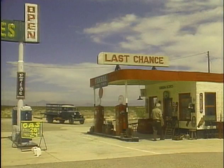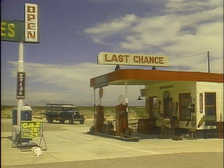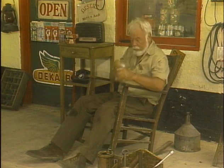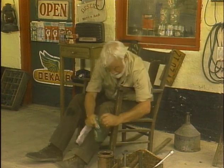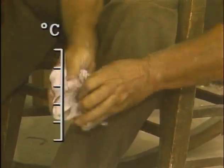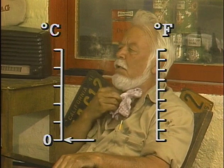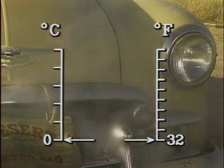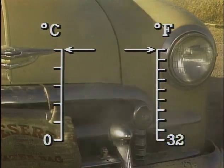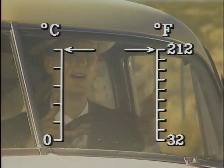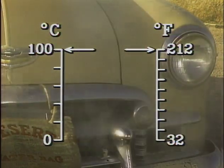Temperature scales are effective scientific scales because they offer standards for comparison. One useful calibration point is the freezing point of water. On the Celsius scale, water freezes at zero degrees. On the Fahrenheit scale, it freezes at 32 degrees. Another reliable calibration point is the boiling point of water: it boils at 212 degrees Fahrenheit, and at 100 degrees on the Celsius scale.